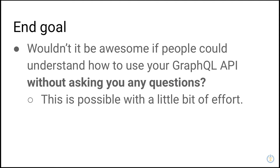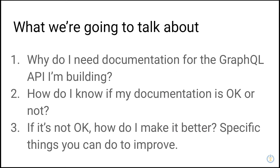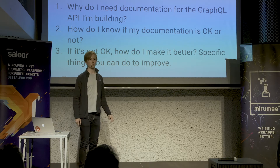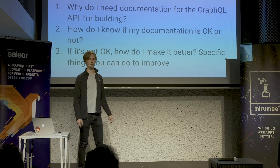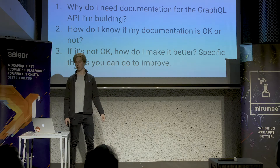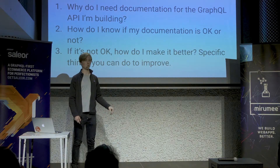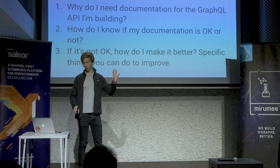The end goal of this presentation is for you to walk out of here and say it's really possible to have a GraphQL API that users understand, and now I understand what kind of documentation they need to provide to achieve that. In order to get there, we're going to talk about three things: what documentation do you need when you're building your GraphQL API, how do I know if my documentation is good or bad, and if it's not where I want it to be, how do I make it better?